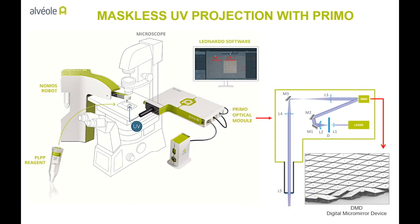We recently launched the PRIMO Optical Module. This device is directly plugged on a conventional inverted microscope and allows to project patterned UV light through the objective of the microscope, directly onto the sample which is placed on the stage holder. Thanks to a micro-mirror device, this UV light can be shaped on demand using our dedicated Leonardo software.